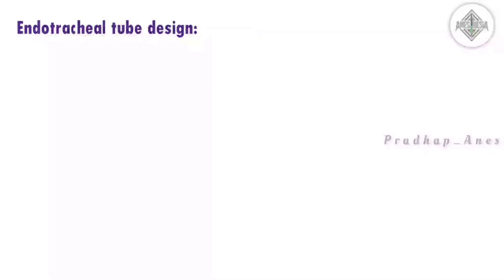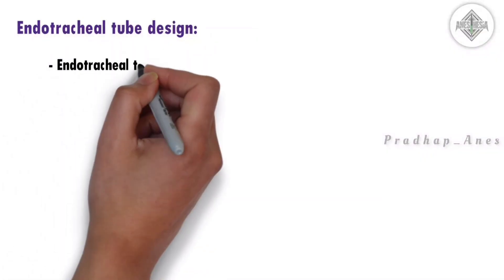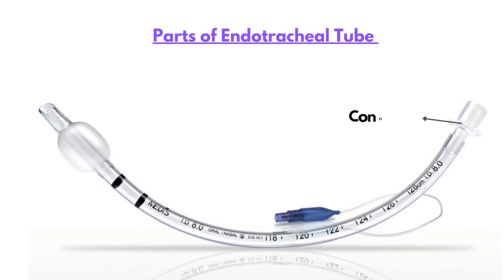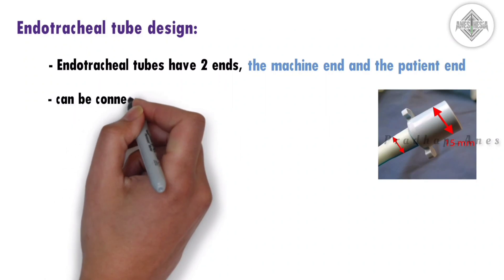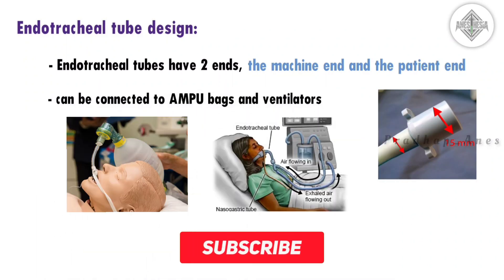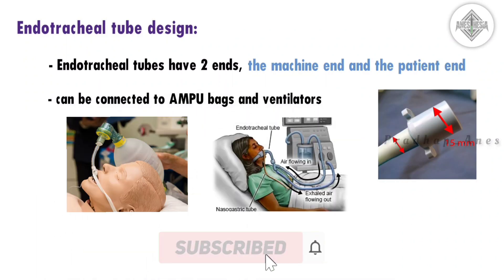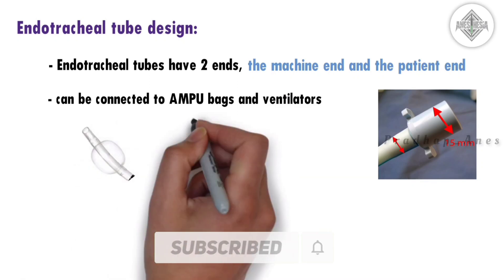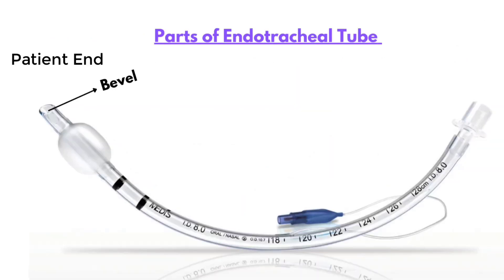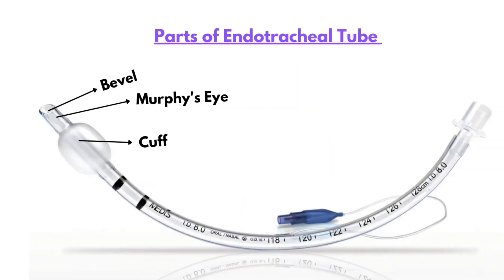Endotracheal tube design. Endotracheal tubes have two ends: the machine end and the patient end. It has a universal 15 mm connector that can be connected to AMBU bags and ventilators. Then there's a transparent curved tube. At the patient end we have a cuff and bevel with Murphy's eye.